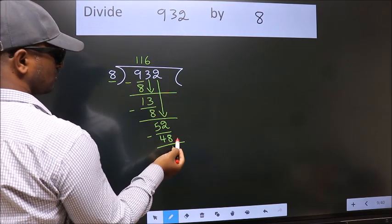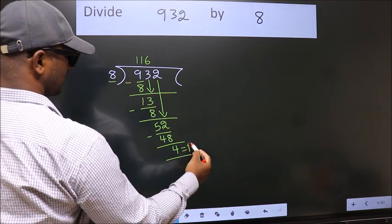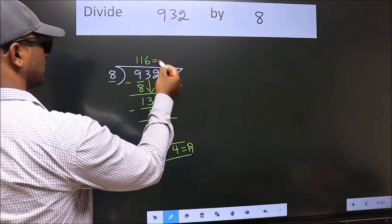No more numbers to bring it down. So we stop here. This is our remainder. This is our quotient.